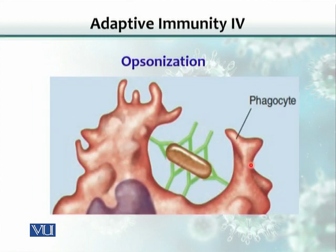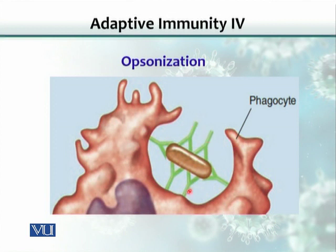A second mechanism is called opsonization. Opsonization means that a single organism is bound all over its surface by antibodies. Opsonization also helps phagocytic cells, like macrophages, to engulf the antigen when it binds the antibodies. The Fc part of the antibody molecule has receptors located on macrophages and other phagocytic cells, making it easy for them to take in and destroy the antigen.